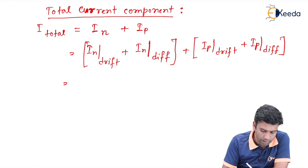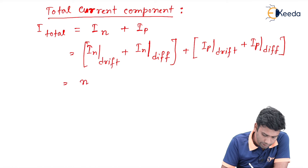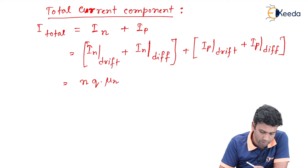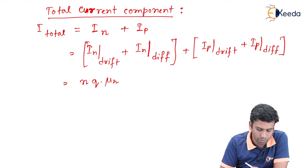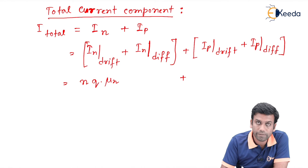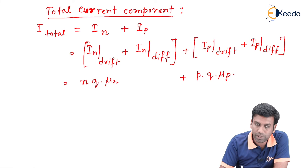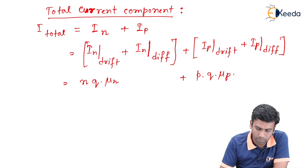The current component for the electron for the drift motion is nothing but n·q·μ_n, where n is the concentration of the electron and μ_n is the mobility of the electron. Similarly, the drift component of current for the hole is p·q·μ_p, where p is the concentration of the holes and μ_p is the mobility of the holes.